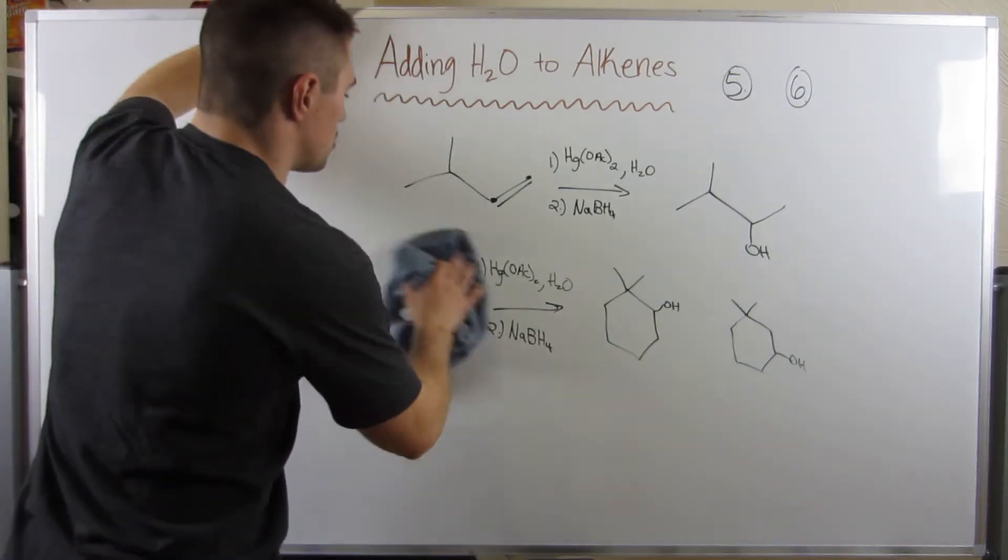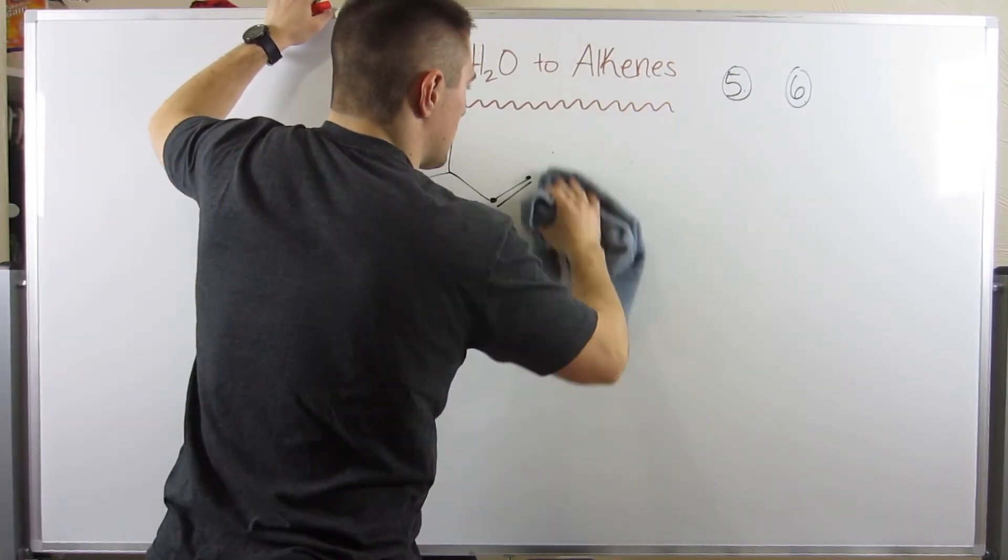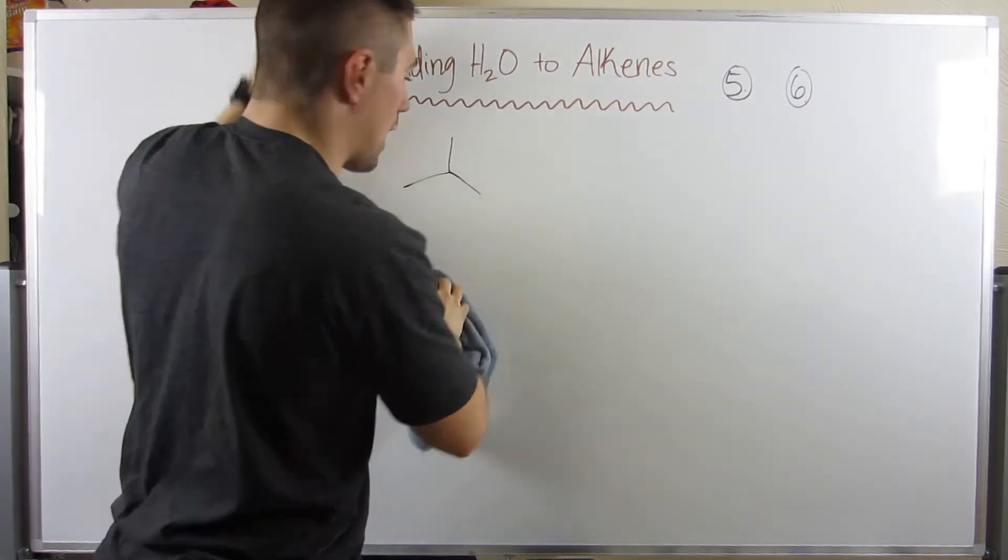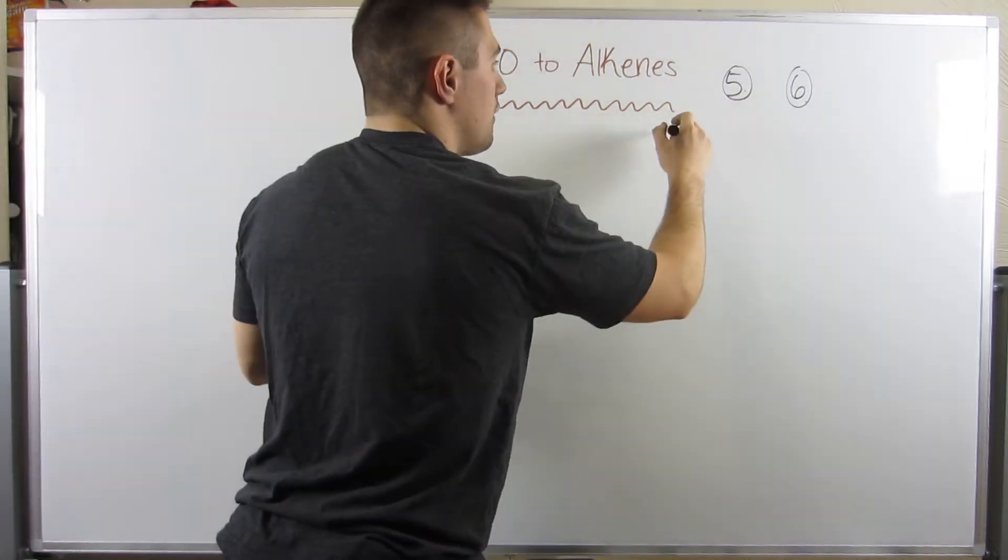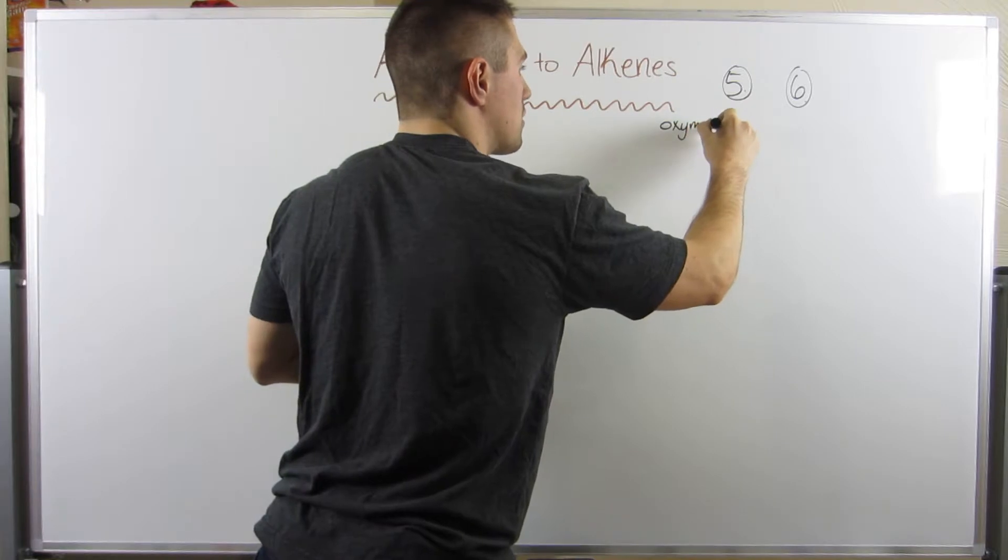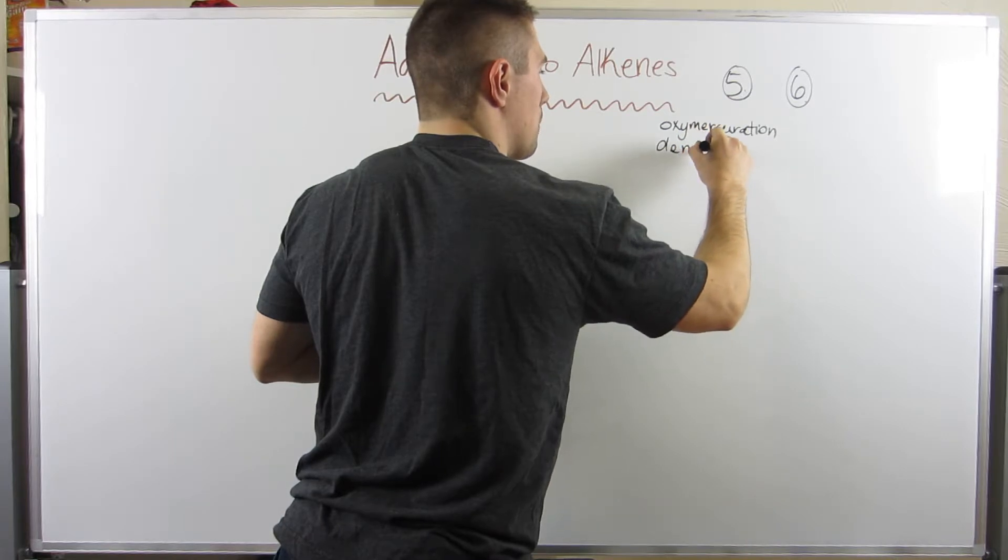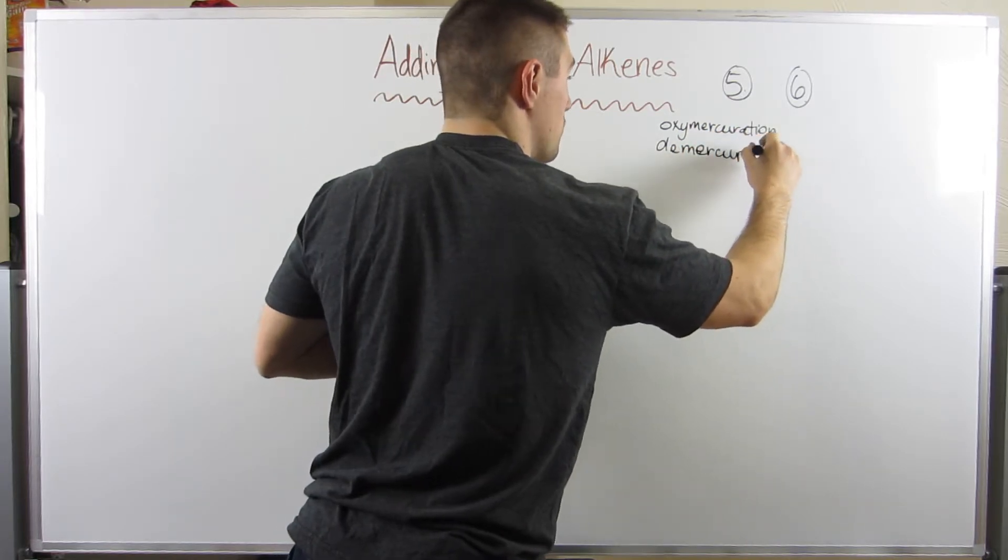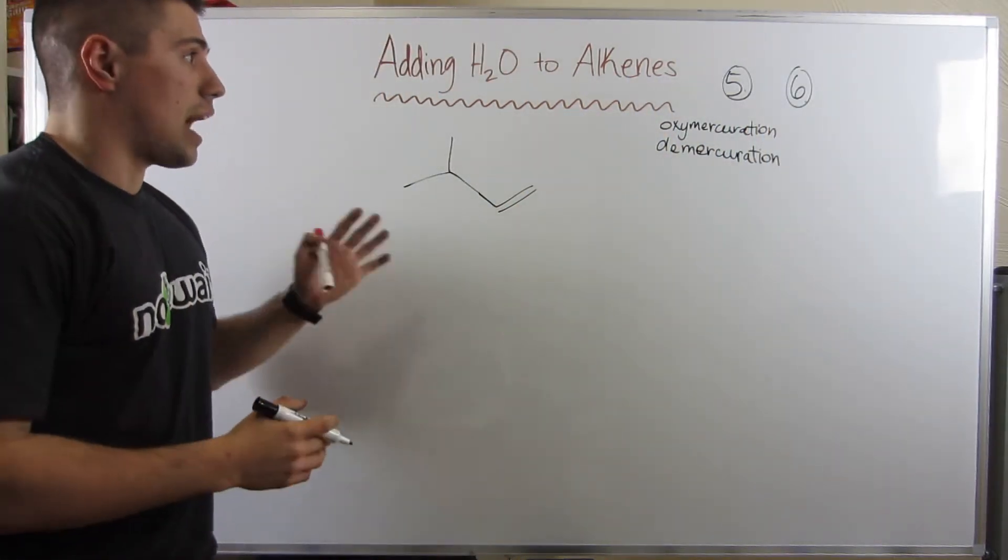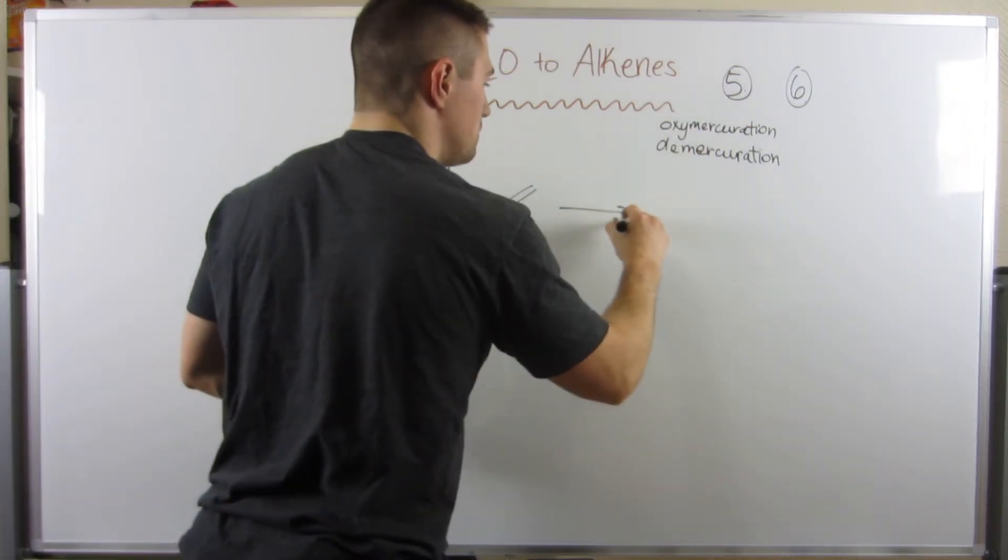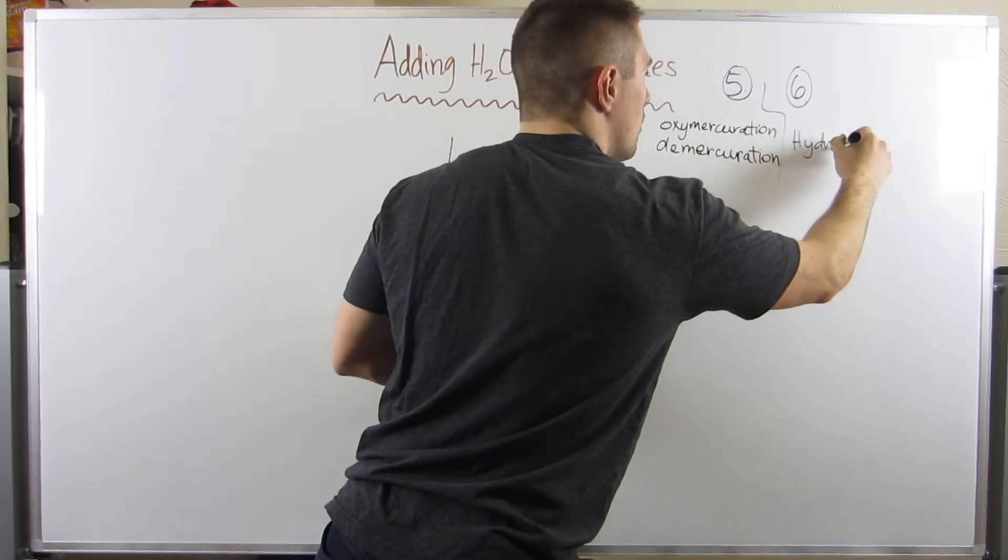Okay, so now I want to show you guys how we can get an addition of water to the least substituted carbon. And again, I'm going to use my rag. Okay, so to also give that reaction a name, 5 is called oxymercuration demercuration. So, literally, pronouncing the name, spelling the name, remembering the reagents, hardest part.